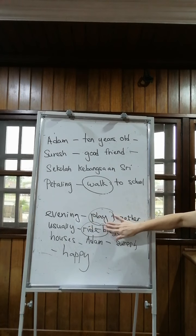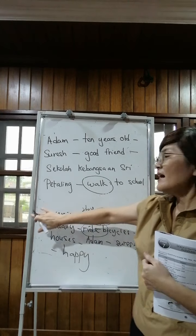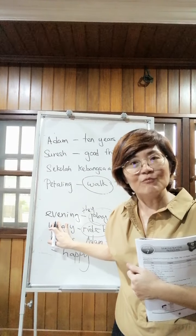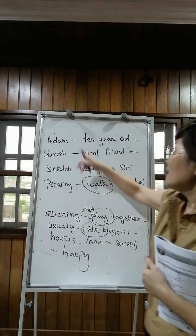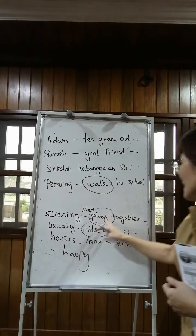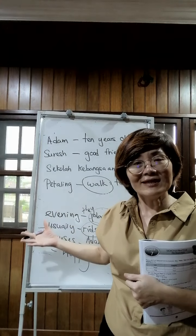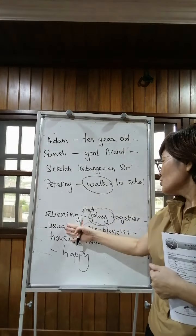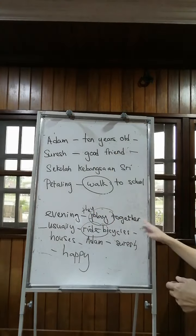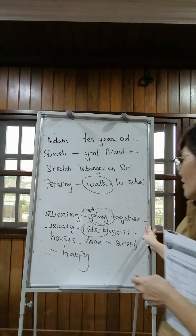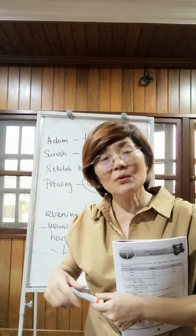Evening play together. You know it's 'they'. So you can say that every evening — because this is the present tense, we put 'every evening' — comma, who plays together? They. Or we can say Adam and Suraj play together. And then usually — they usually ride their bikes around their houses.